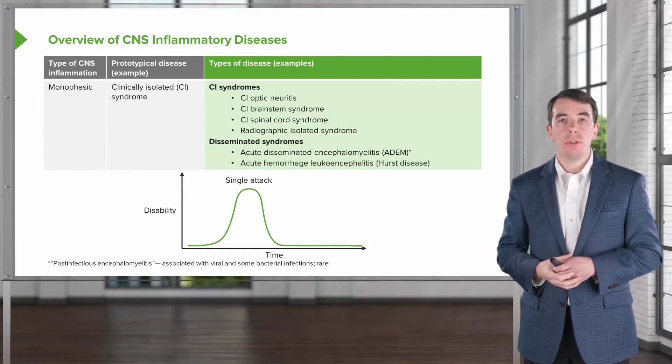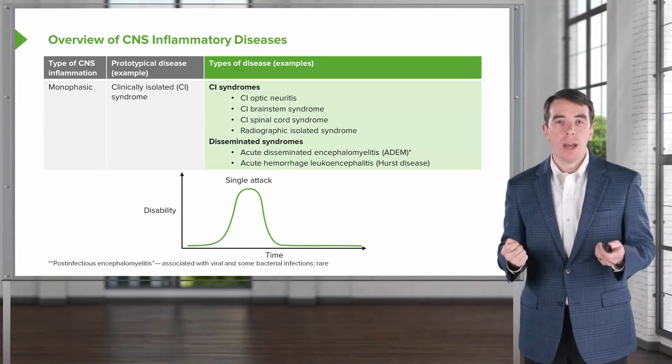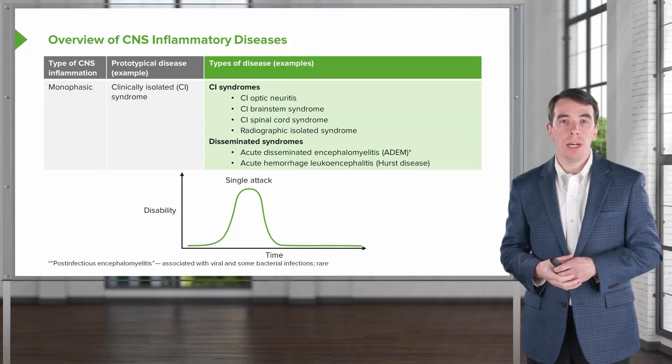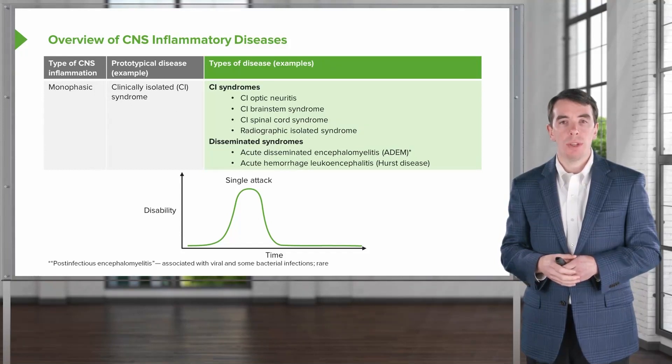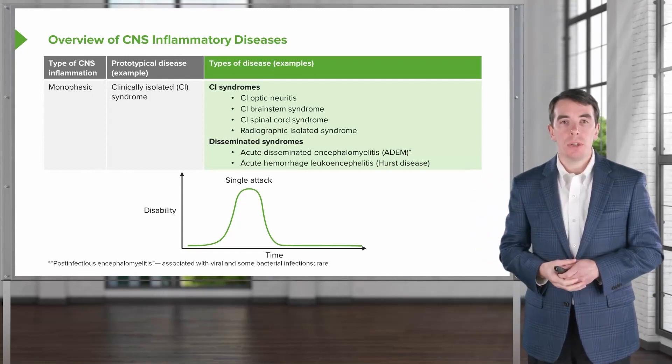And then there's a second condition called acute hemorrhagic leucoencephalitis or Hurst encephalitis, which is just a hyperacute and fulminant form of ADEM. And again, these are where there's an attack all over the central nervous system one time as a monophasic course.